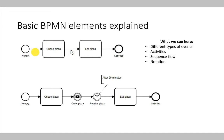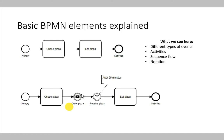Furthermore, there are events. Events show that something happened outside or inside the process. For example, a start event, which is a simple circle, starts a process. We have a bold circle which is an end event — it ends a process. And we have events represented by two circles, which are intermediate events — something happening during the process execution, for example a pizza is ordered or a pizza is received. Using the small icons inside the events we can further annotate what the event is about.